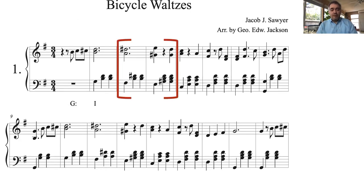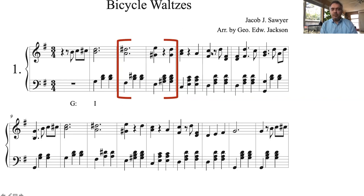Now, if we look at the score, we see that two of these measures have extra accidentals. We are in the key of G major, and these two measures have extra accidentals. So let's not analyze them initially. Let's look at the other chords that we have here in this first system.